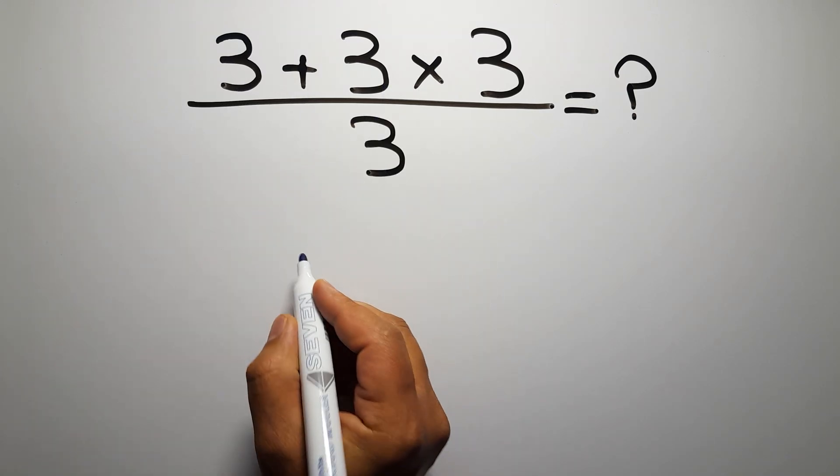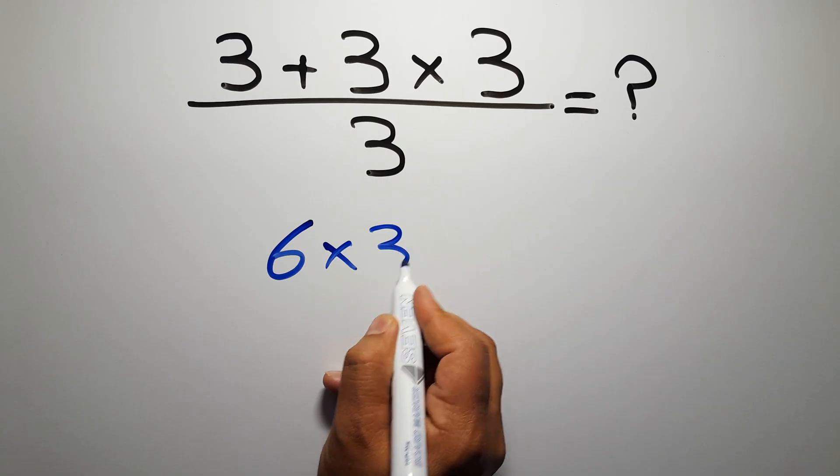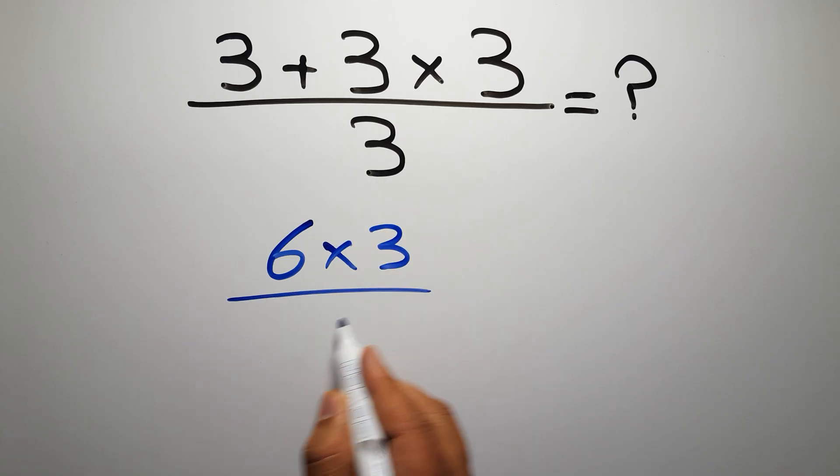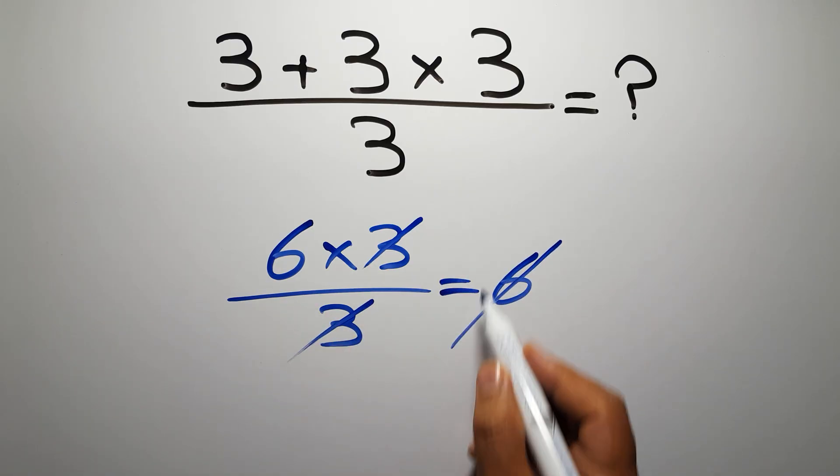3 plus 3 gives us 6. So 6 times 3 over 3. We can easily cancel this 3 and this 3. So here we have just 6. But this answer is not correct.